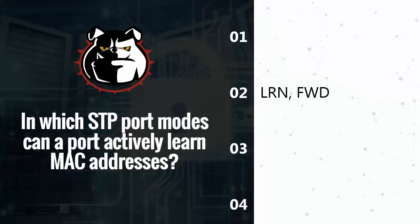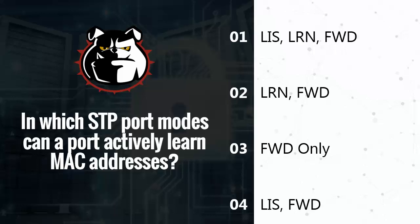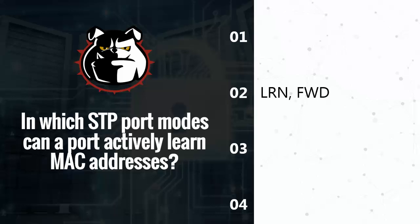Learning and forwarding are the two port modes in STP where a port can actively be learning MAC addresses. This is where the names can be a little bit confusing, because of course you have to know the order of the modes — we'll save that for another question. With learning, you could look at that and say it's learning the MAC addresses, and that is what it's referring to. But what about listening mode? What exactly is a port in listening mode listening for? It's not learning MAC addresses yet because it's not receiving or forwarding frames. What it's actually doing is listening for BPDUs. So that's what listening is referring to — it is not referring to learning or listening for MAC addresses; it's listening for BPDUs. So the answer to today's question: learning and forwarding.